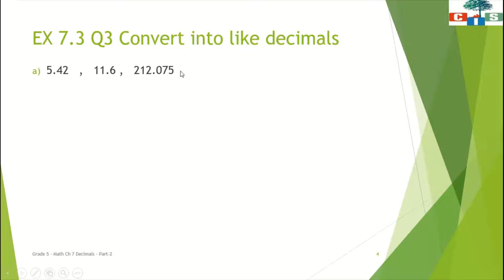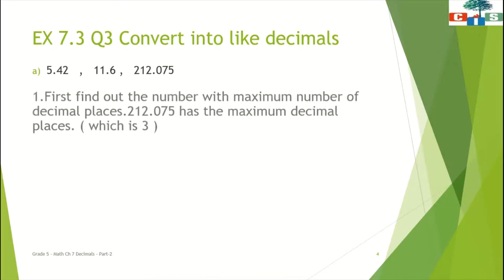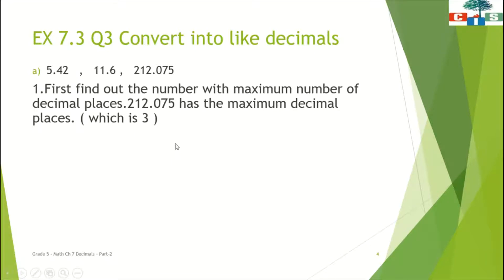We have to convert these into like decimals. The first step is that you have to find out the number with the maximum number of decimal places — the maximum number of fractional parts. Here we can see that 212.075 has the maximum decimal places, which is 3.